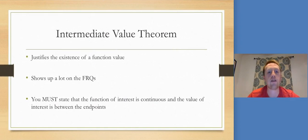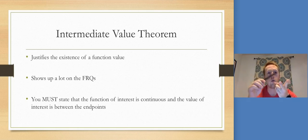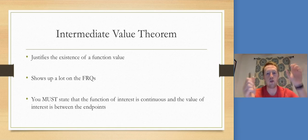The Intermediate Value Theorem comes up a lot. It justifies the existence of a function value. It's very common on FRQs. Big thing: if it's on an FRQ, you must state that the function of interest is continuous and that the value of interest is between the endpoints. That's the hypothesis of the intermediate value theorem. Just put it on the paper.